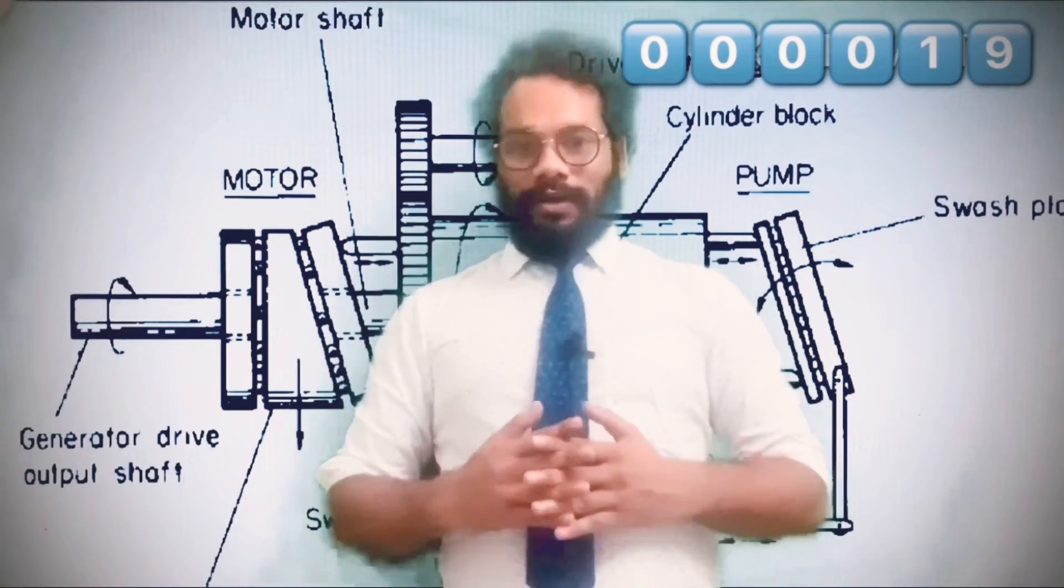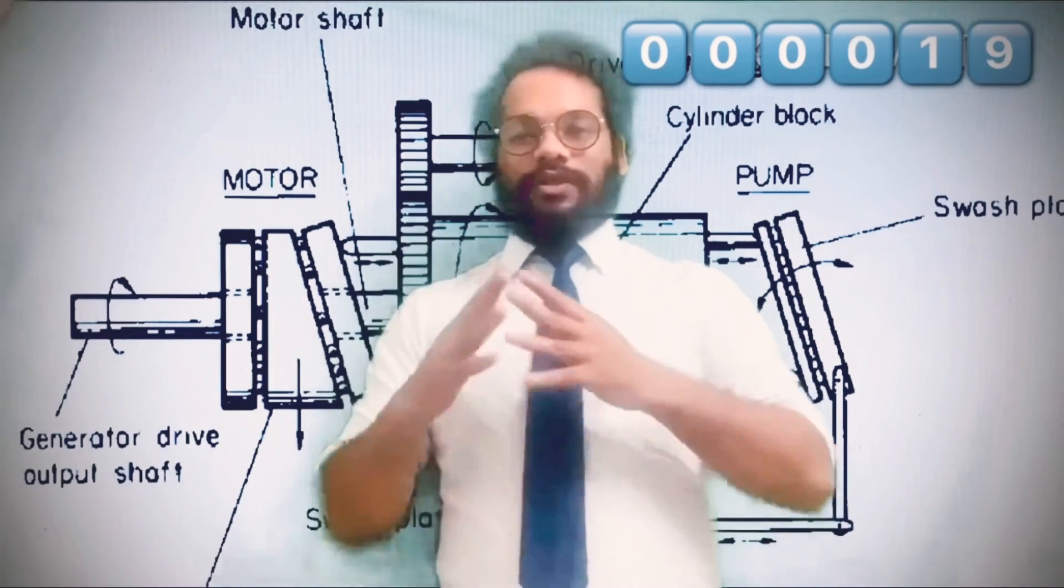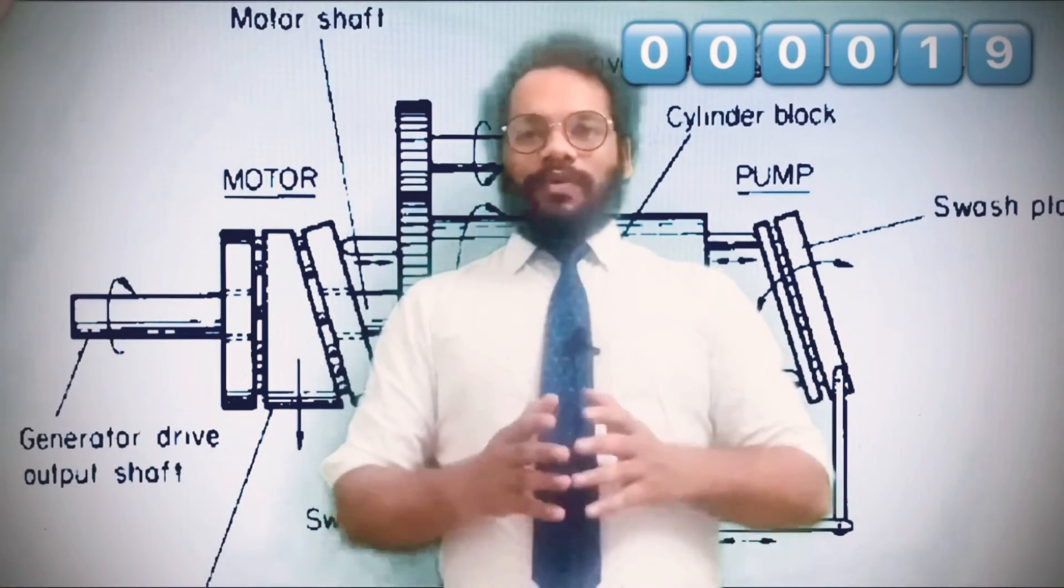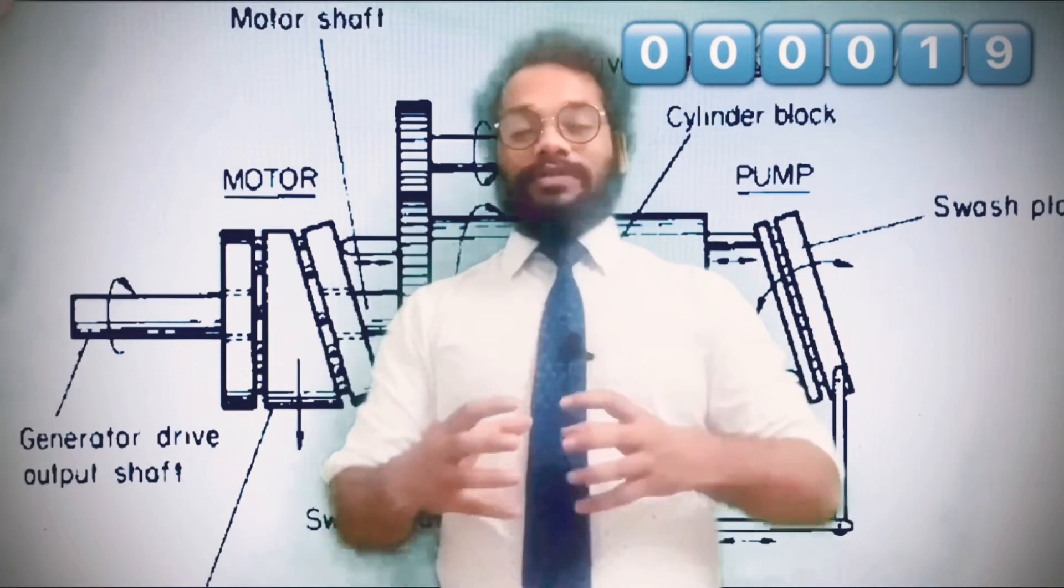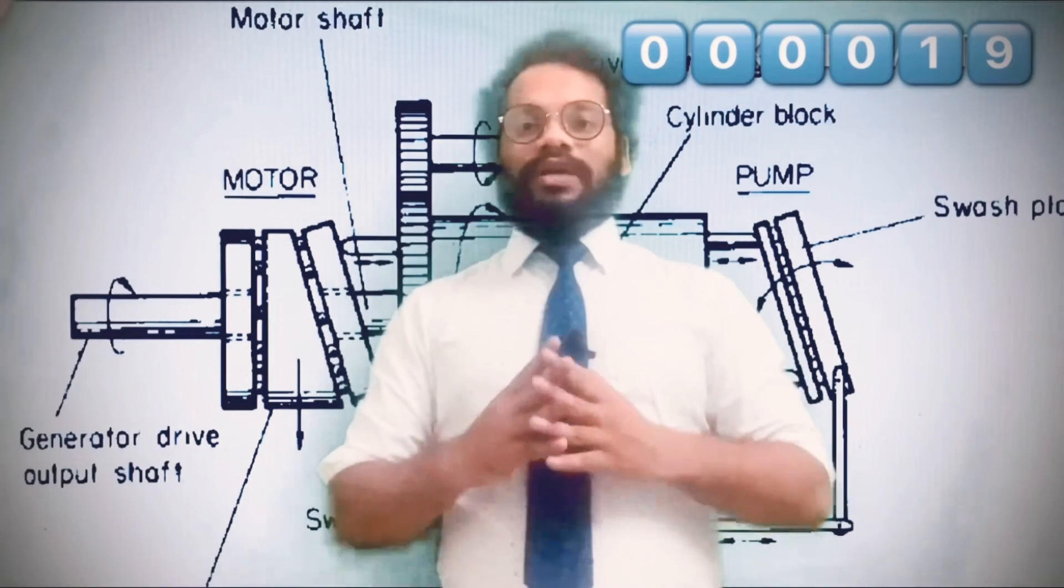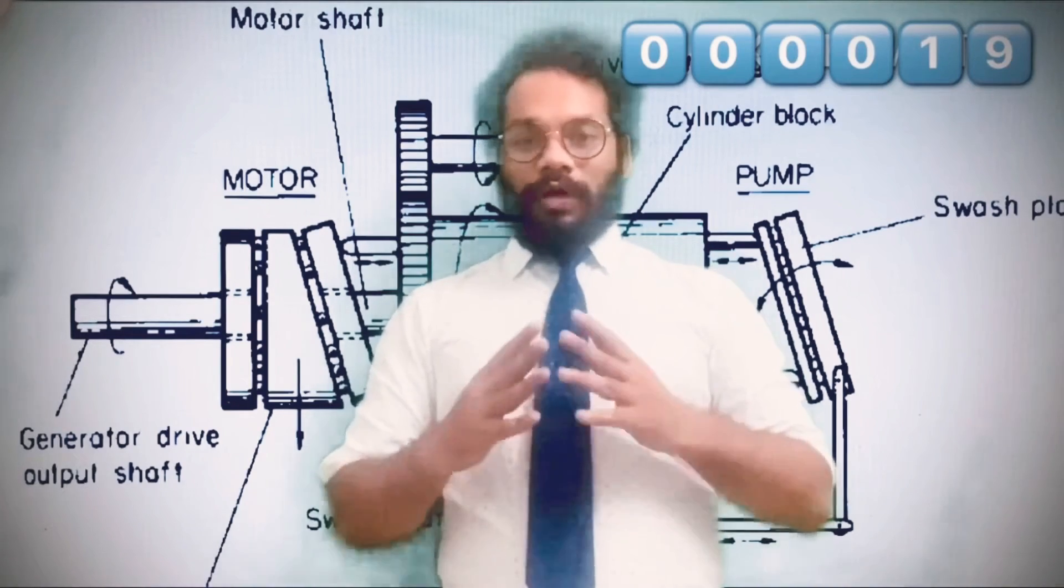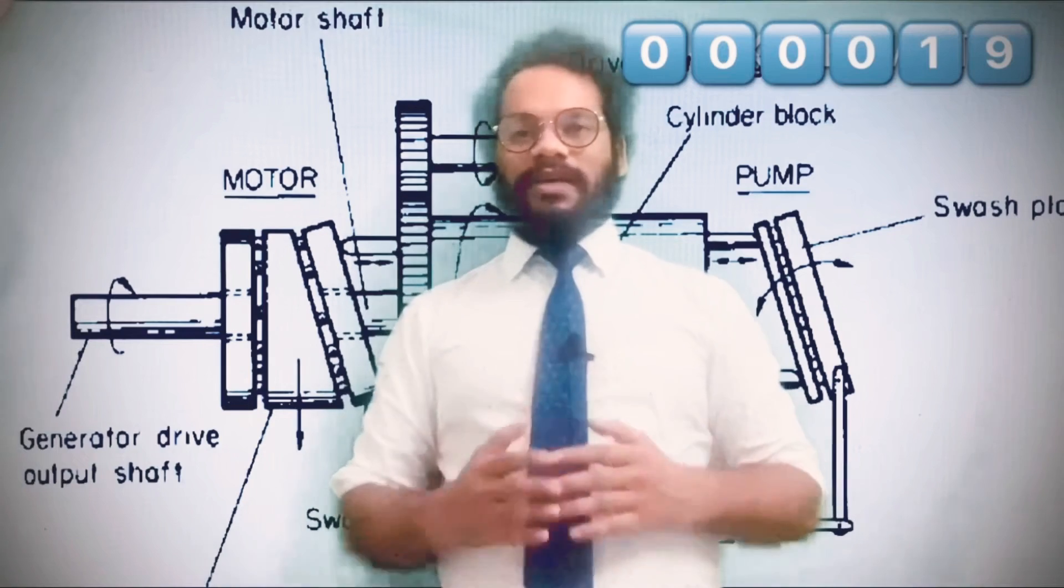Today I am going to discuss about the construction and operation of CSD. As you know, CSD is a unit which is mounted between the engine and generator so that it provides a constant drive. Why do we need a constant drive? Constant speed is required because the generator's output frequency is determined by the speed it is driven.